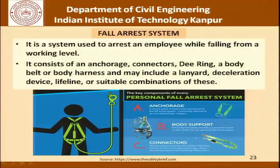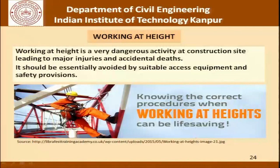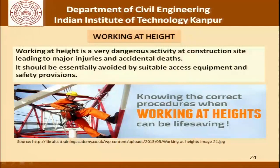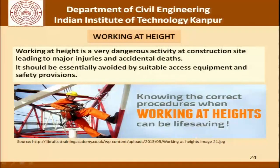A fall arrest system is used to arrest an employee while falling from a working level. It consists of an anchorage, connectors, D-ring, body belt, body harness, and may include a lanyard, deceleration device, lifeline, or a suitable combination. Working at heights is a very dangerous activity that could lead to serious injuries and deaths, and should be avoided by using suitable access equipment and safety provisions.